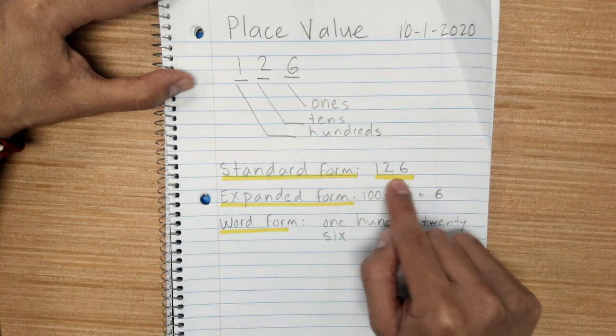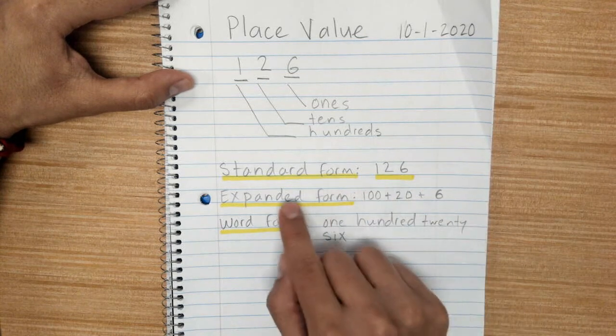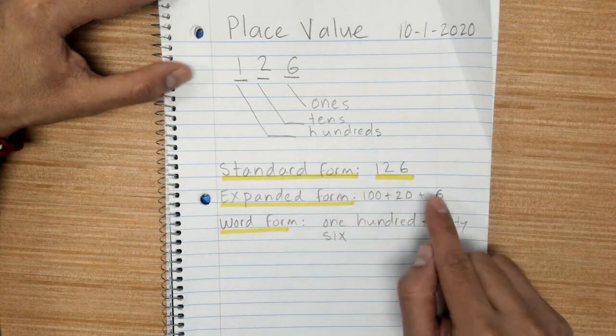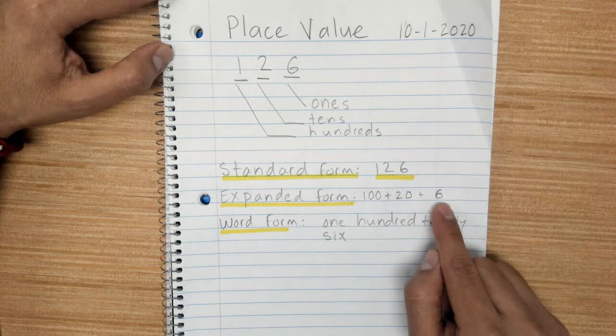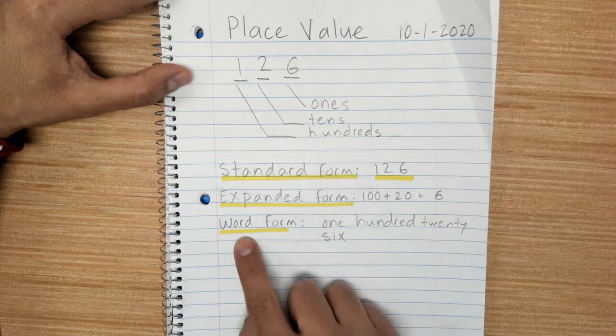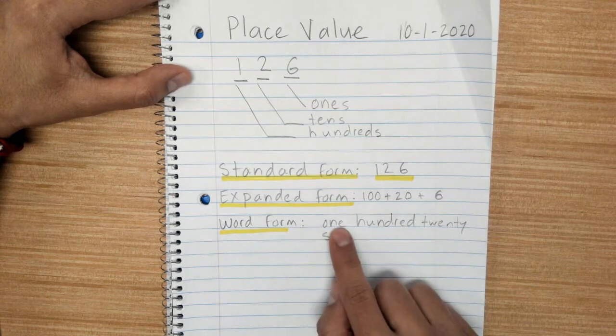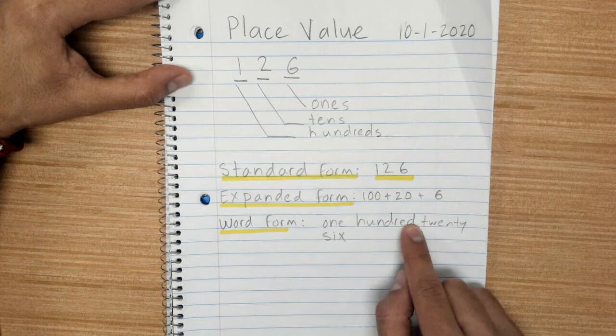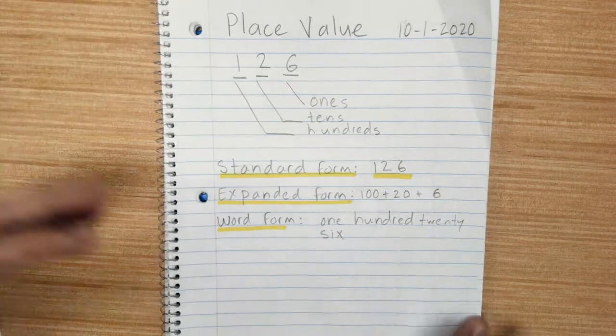Standard form is a regular number written down like this. Expanded form is when you look at the place value of each number. And word form is when you write it in words. Then go to the next page.